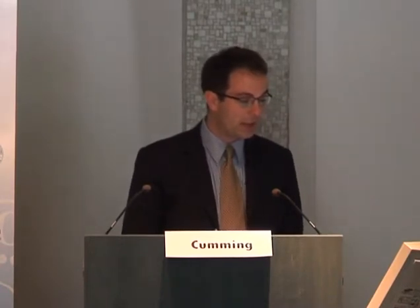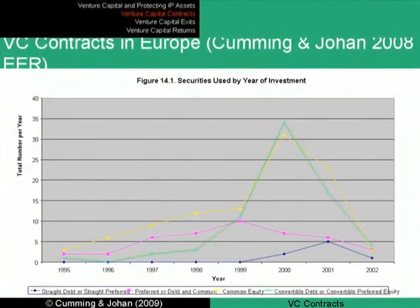Having a legal system which allows those rights to be voluntarily allocated and protected after they're allocated is very important to the venture capital process and the financing of innovation. This is something Sophia and I published in a recent paper in the European Economic Review, just to give you a sense of the variety of securities used.